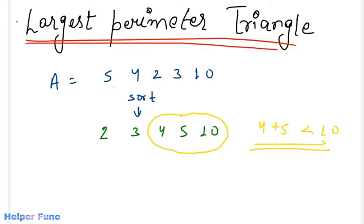now it can be noticed that if these three sides do not satisfy, then if I combine 10 with any other sides, they will also not satisfy, because these will definitely be less than 4 and 5. And if 4 and 5 does not satisfy, then obviously these will also not satisfy.